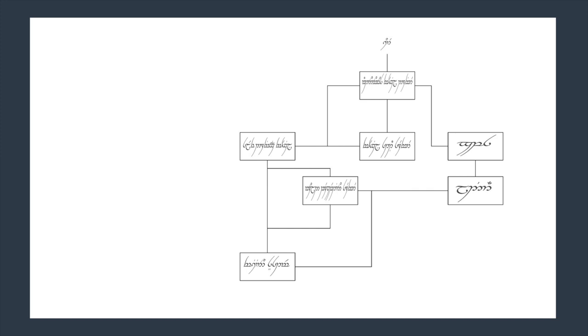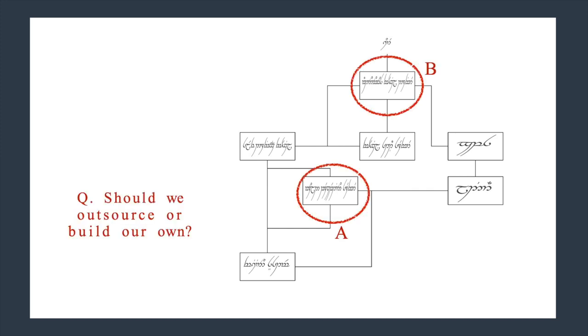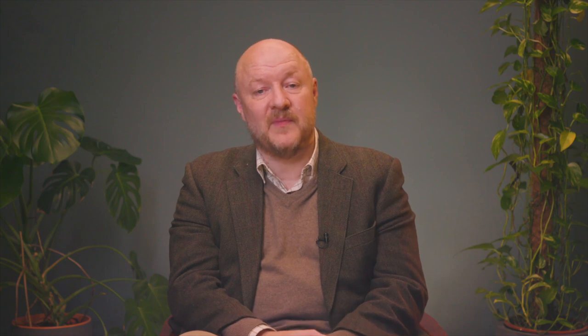I've now poisoned your minds with this technique. To demonstrate it, I'm going to give you a graph for a self-driving car which I've translated into Elvish, and ask: should we outsource or build our own component A and component B? Looking at that graph, most of you would agree it's impossible to answer that question — but that's the kind of decision we make almost every day. Now let me convert it into a map. Should we outsource or build our own A or B? Most of you can see we should probably outsource A and build our own B. That's the difference between a map and a graph, and the exposure of context.